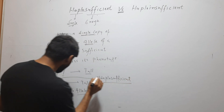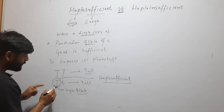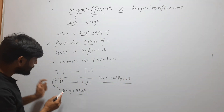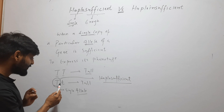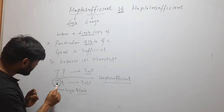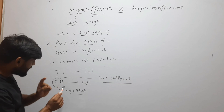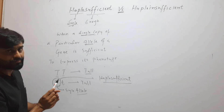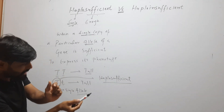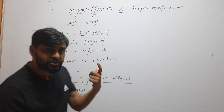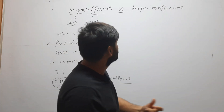So here you can see that when it is single, in case of heterozygous condition, another allele is small t. So this capital T is single and it is expressing itself and causing its phenotype. So this will be called haplosufficient.